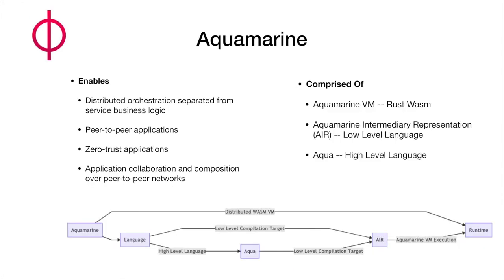So what is Aquamarine? Aquamarine is actually an umbrella comprised of multiple tools. One of them is a virtual machine developed in Rust — it's a WebAssembly module. It includes a low-level language, AIR (Aquamarine Intermediate Representation), which we'll be looking at today. That low-level language is intended to be a compilation target. We also have Aqua, our high-level language, which is super ergonomic — but it's not quite ready yet, about another week or so. What this ecosystem allows you to do is separate the orchestration from the service business logic, which is a huge step towards getting the efficiencies possible through peer-to-peer networks.